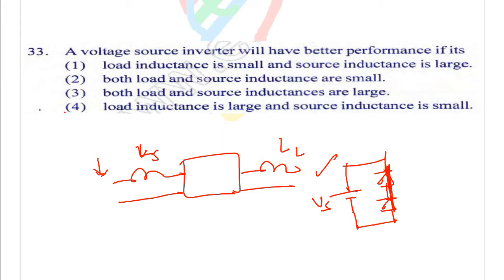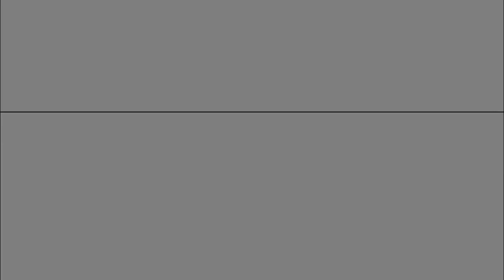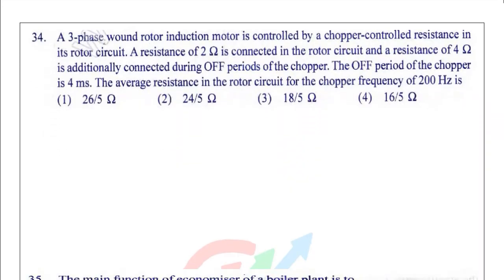Next question: A three-phase wound rotor induction motor is controlled by chopper-controlled resistance in the rotor circuit. A resistance of 2 ohms is connected in the rotor circuit and a resistance of 4 ohms is additionally connected during off periods of the chopper. The off period of the chopper is 4 milliseconds.